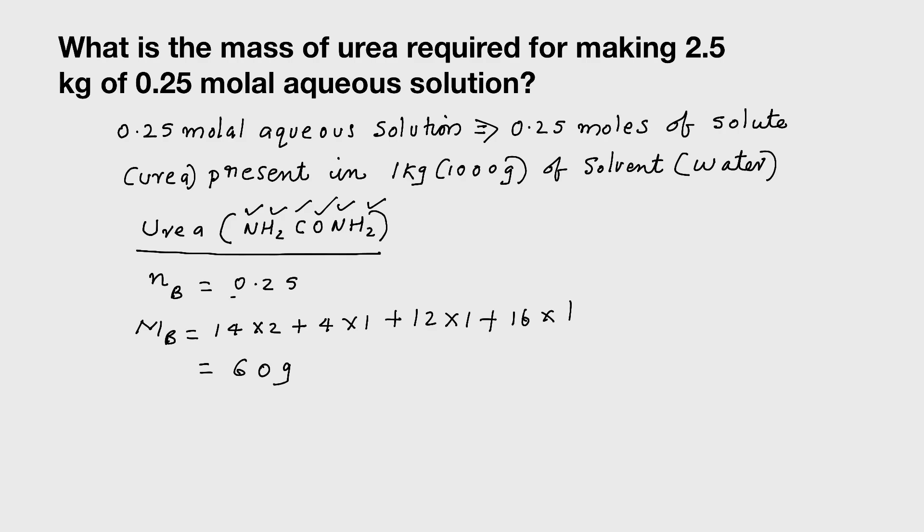You have number of moles of urea and molar mass, so you can find the mass of urea. Number of moles is equal to mass by molar mass. By using this equation, you can find the mass of urea. Wb is equal to Nb into Mb, so 0.25 into 60. On calculating, you will be getting 15 gram.